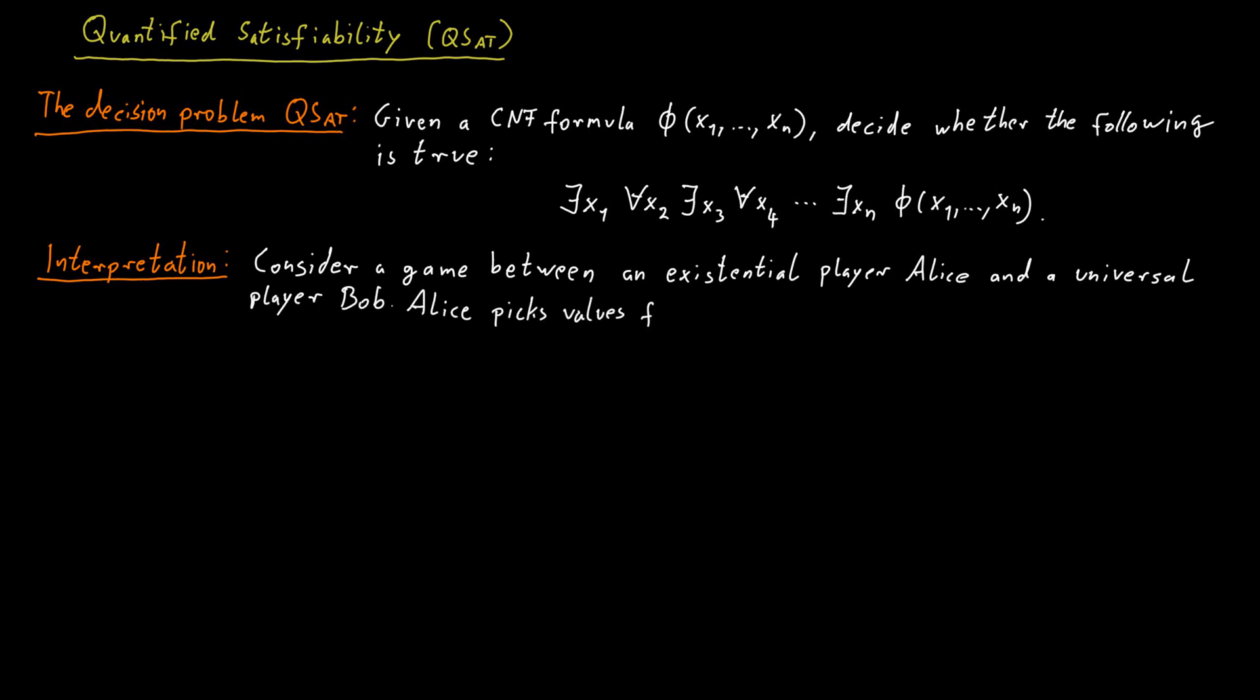Alice picks values for the odd numbered variables x1, x3, x5 and so on. And Bob, the universal player, picks values for the variables x2, x4, x6, so all the even numbered variables. And we have a game between Alice and Bob that works as follows.